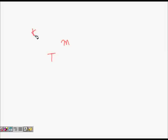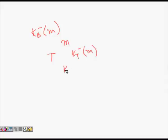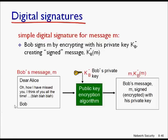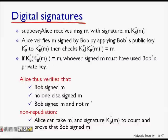Bob's private key is not known to Trudy, so there is no way for her to produce kb minus. If Trudy signs a message with her own key kt minus and claims it is from Bob, when Alice applies Bob's public key kb plus to kt minus of m, it is highly improbable that she will get m back — she will get some m dash, which will not equal m.